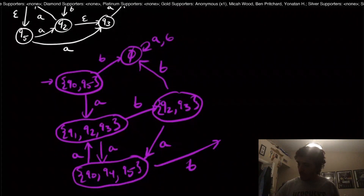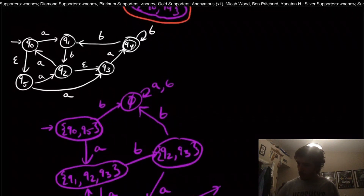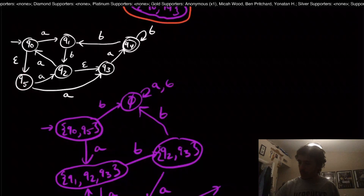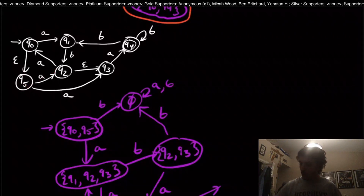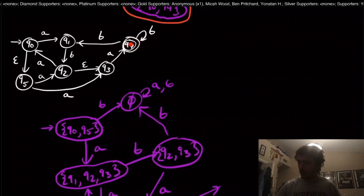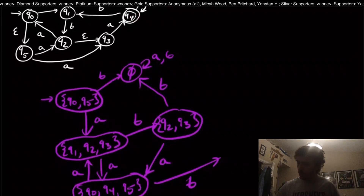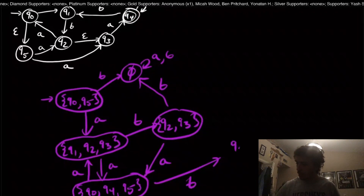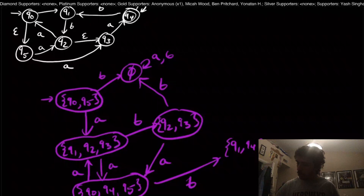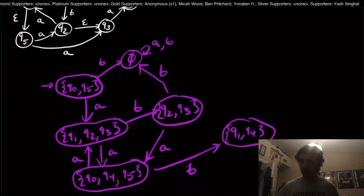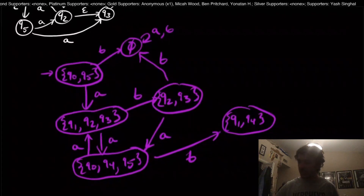On input B from {q0, q4, q5}: q0 goes nowhere on B, q5 goes nowhere on B, so the only one that matters is q4, giving us state {q1, q4}.